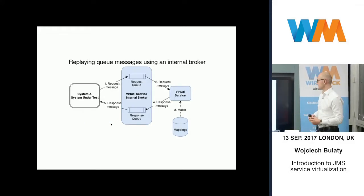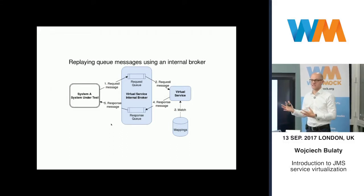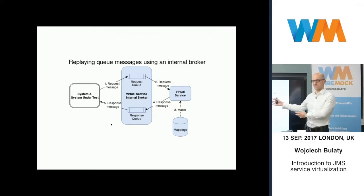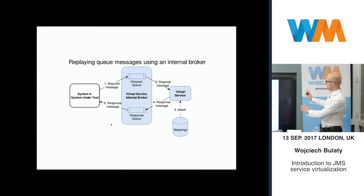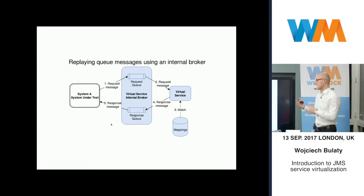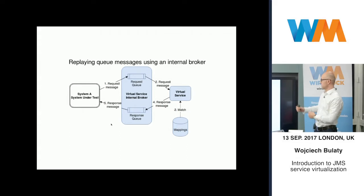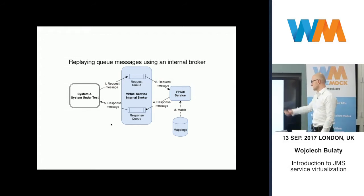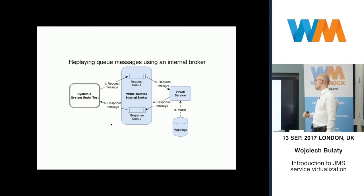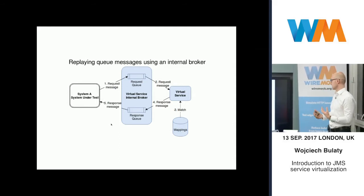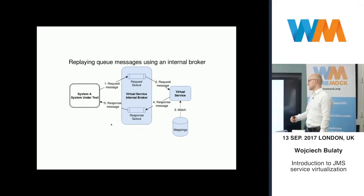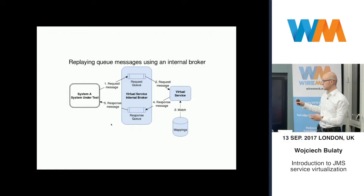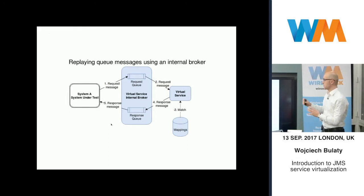Once we've recorded something, we want to use it. We're going to replay those messages and thereby be able to test our system in isolation. System A — the system under test — sends a request message (arrow one) to the request queue, which is on the virtual service. The real broker and System B are absent; we're only using the virtual service infrastructure. The virtual service consumes the request, looks at the mappings, finds a match, creates a response message (arrow four), sends it to the response queue, and System A consumes it (arrow five). This way we test System A in isolation.